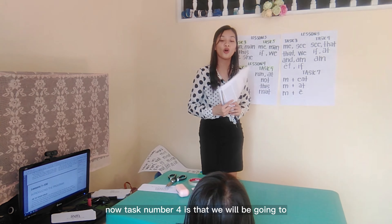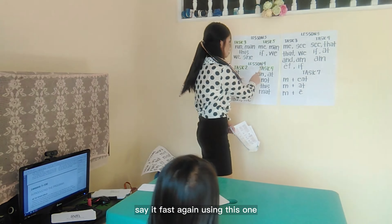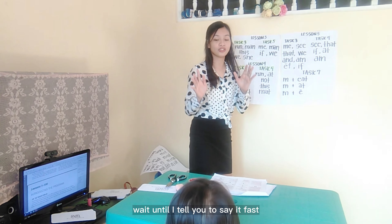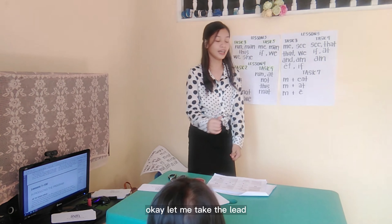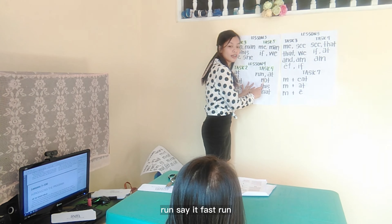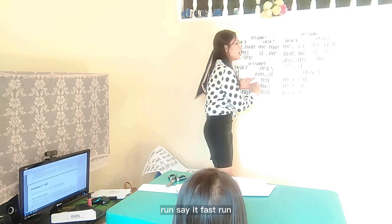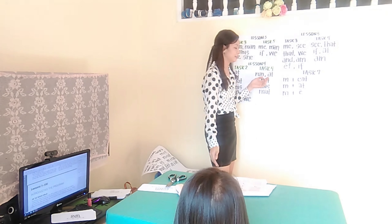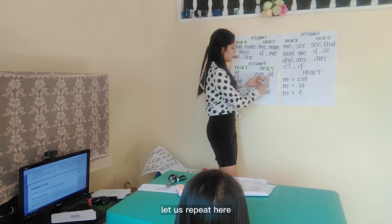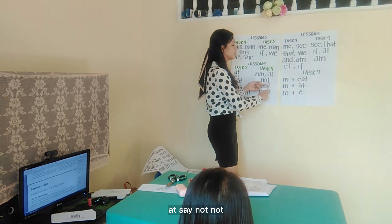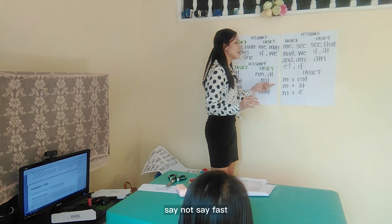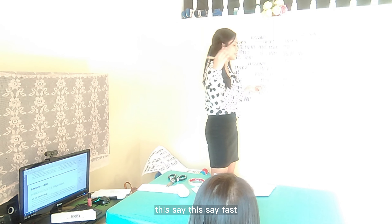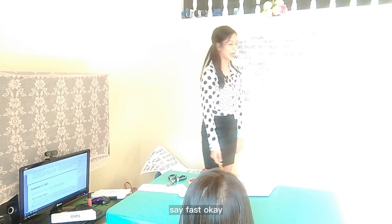Now task number four — we will play say it fast again using this one. Remember, say it fast. For example: run. Wait until I tell you to say it fast, okay? Let me take the lead — run. Say it fast: run. One more time — run. Say it fast: run. Say it fast: e. Say it fast: e. Let us repeat — e. Say it fast: e. Say not. Say it fast: not. Say these. Say fast: these. Say mad. Say it fast: e. Good job.